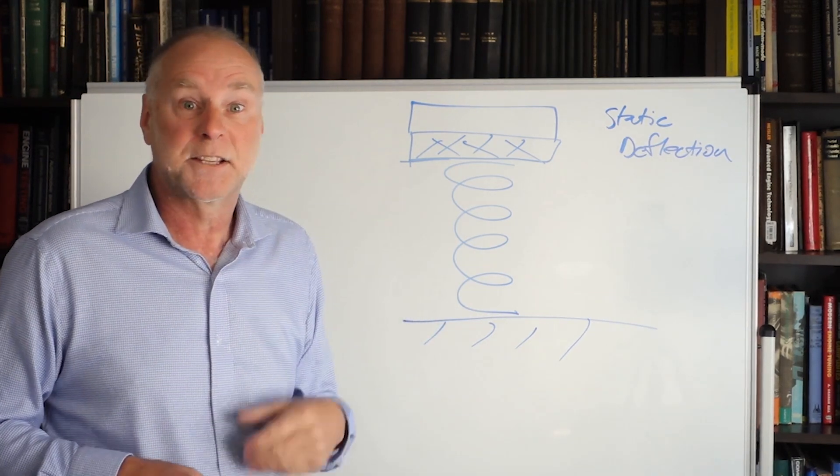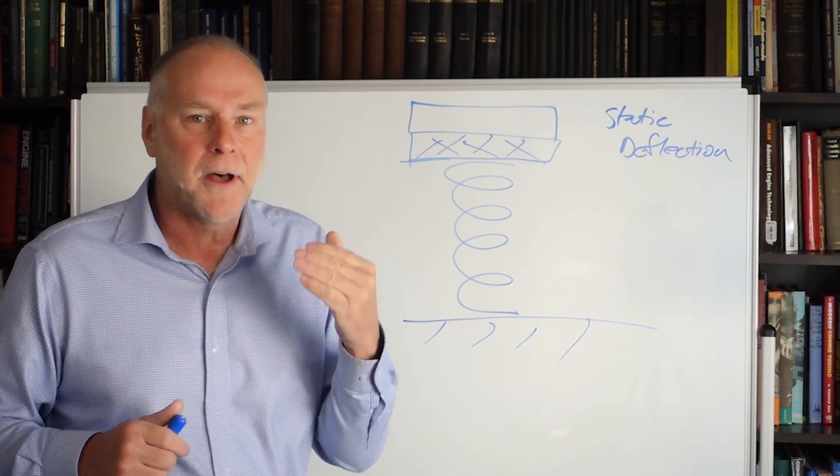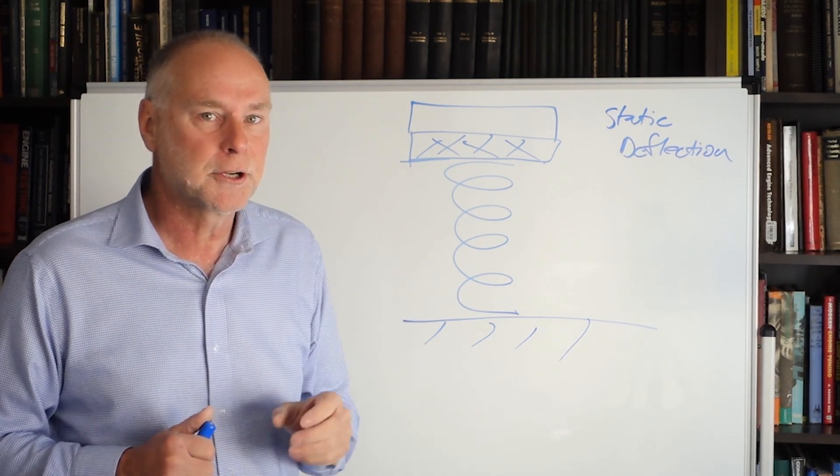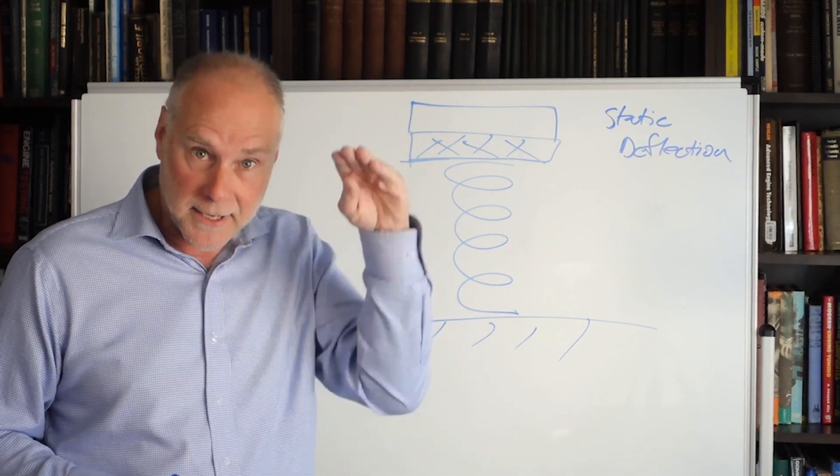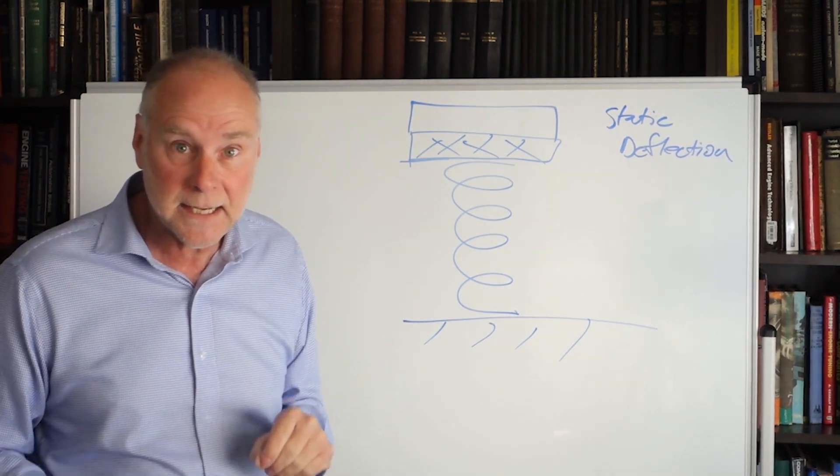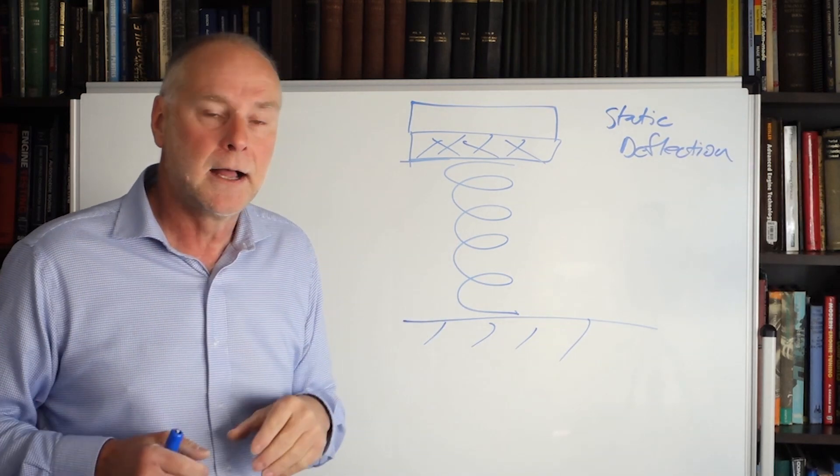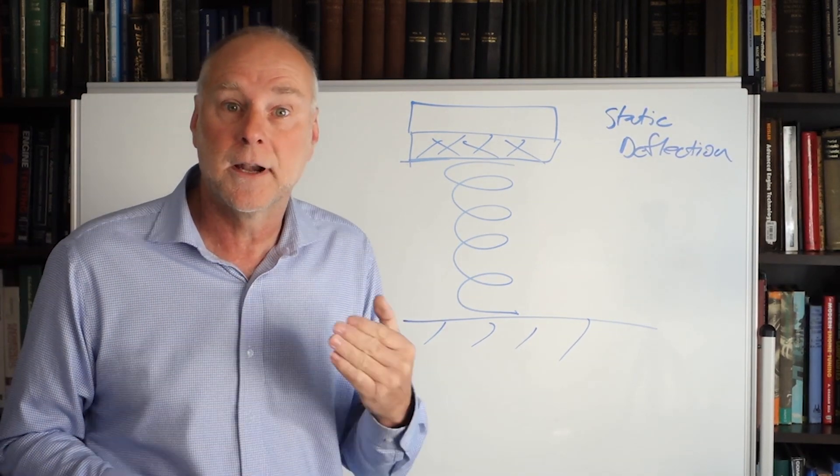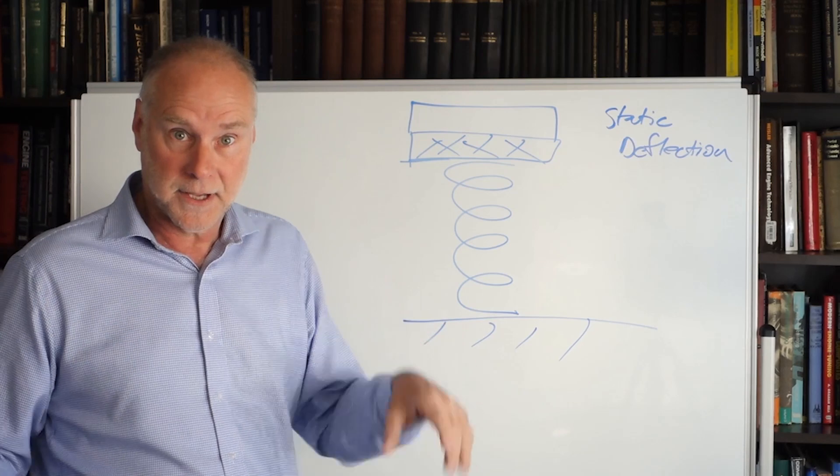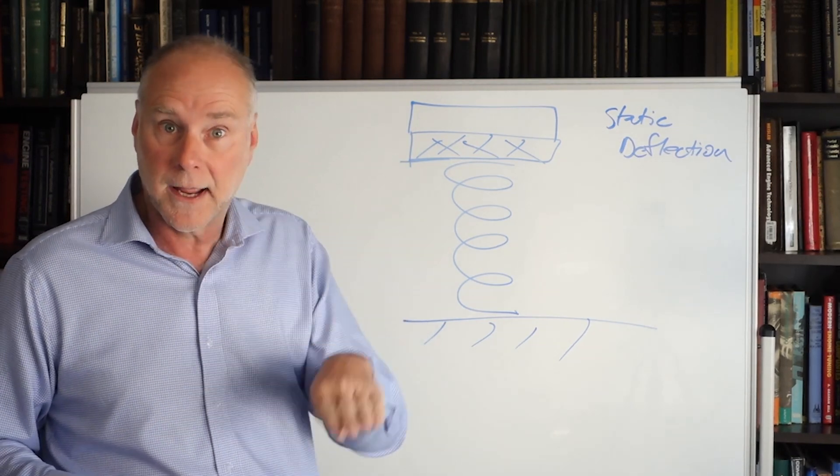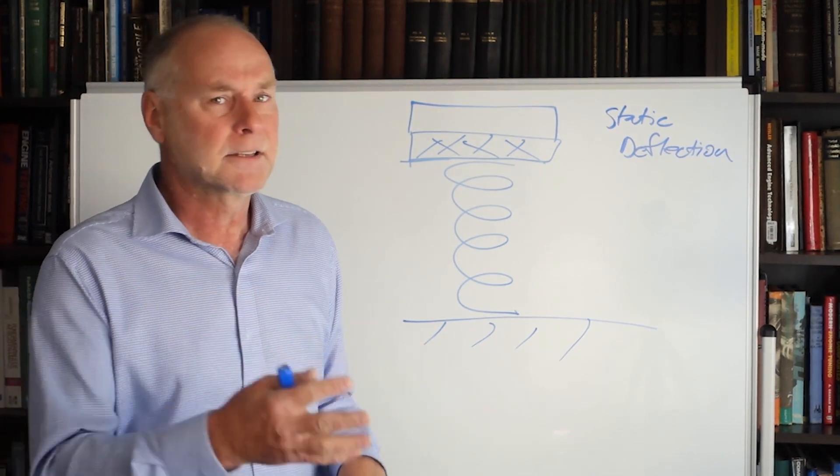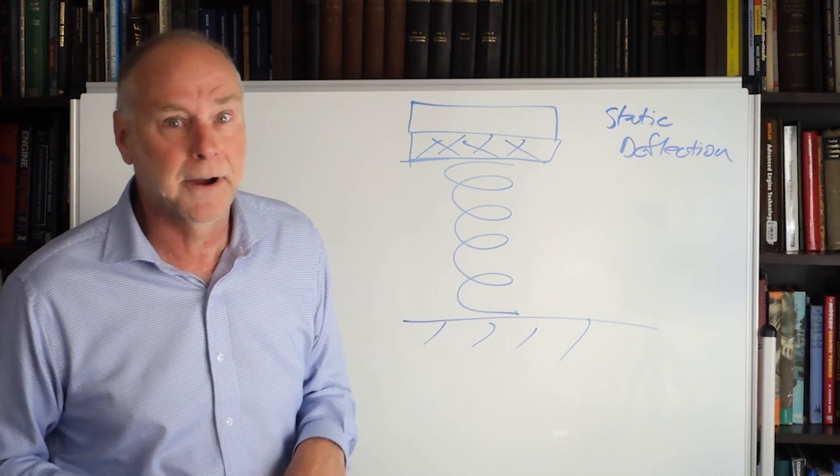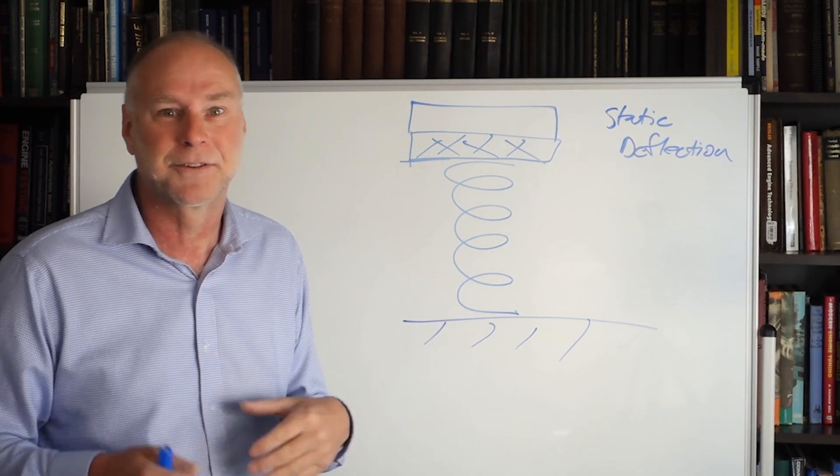So a sporting car might have a natural frequency of the suspension of two hertz. If you took the dampers out and bounced it up and down, it would bounce up and down twice a second. That's fairly stiff. A luxury car might have a natural frequency of only one hertz. If you take the dampers out, you bounce it up and down, it goes up and down only once per second. Incidentally, the fact you take the dampers out doesn't change the natural frequency very much at all. It just makes it easy to measure and easy to describe.